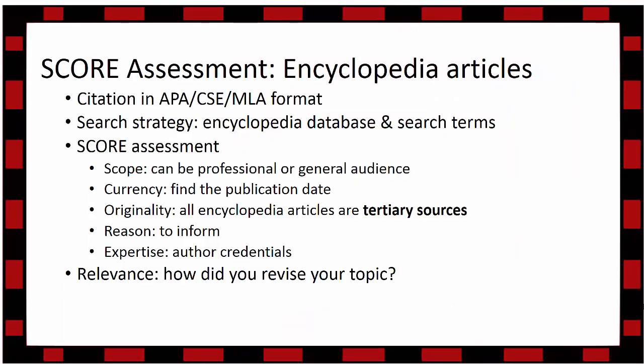After choosing your articles, you will need to do a score assessment for each encyclopedia article. Make sure they are from different encyclopedias. You will need to include the citation in the format of your discipline of study. Your search strategy should include the encyclopedia database name, your search terms, and why you chose your article from the results list. Then, assess the article with the elements from the score assessment, with a point value and an explanation for the points, and a general comment about the credibility score near the total points. For the relevance comment, give a brief summary of the article and include how this source helped revise your topic.